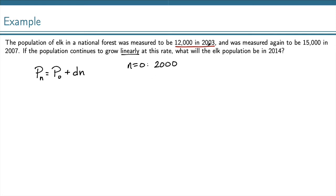So, 12,000 in the year 2003, that would be I have 12,000 equals P0 plus D times n, and in 2003, n will now be 3, because that's 3 years after the year 2000.